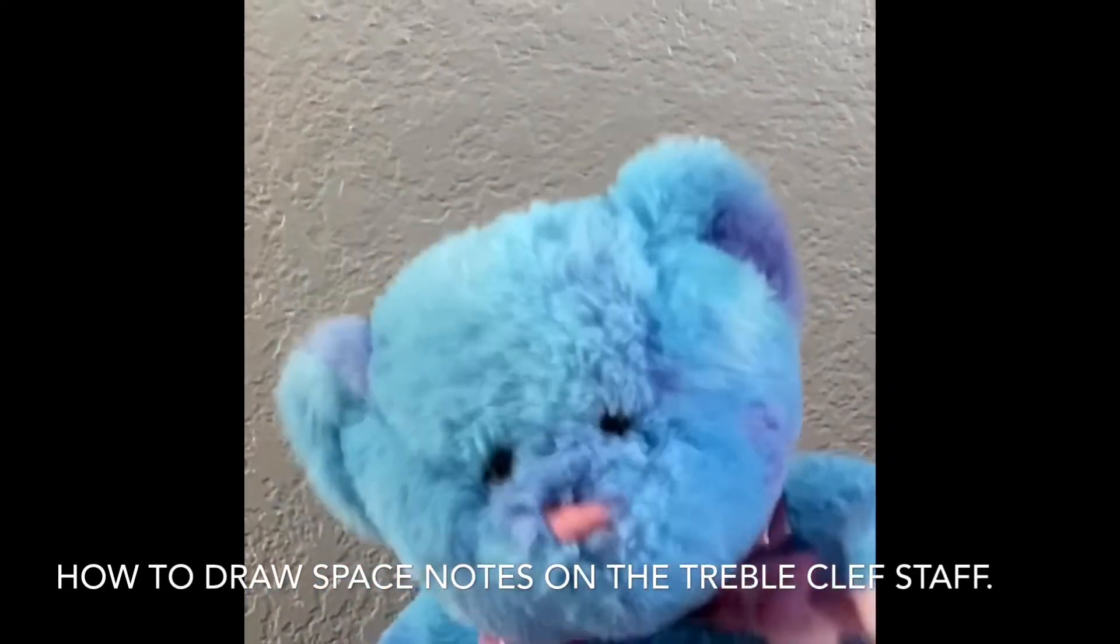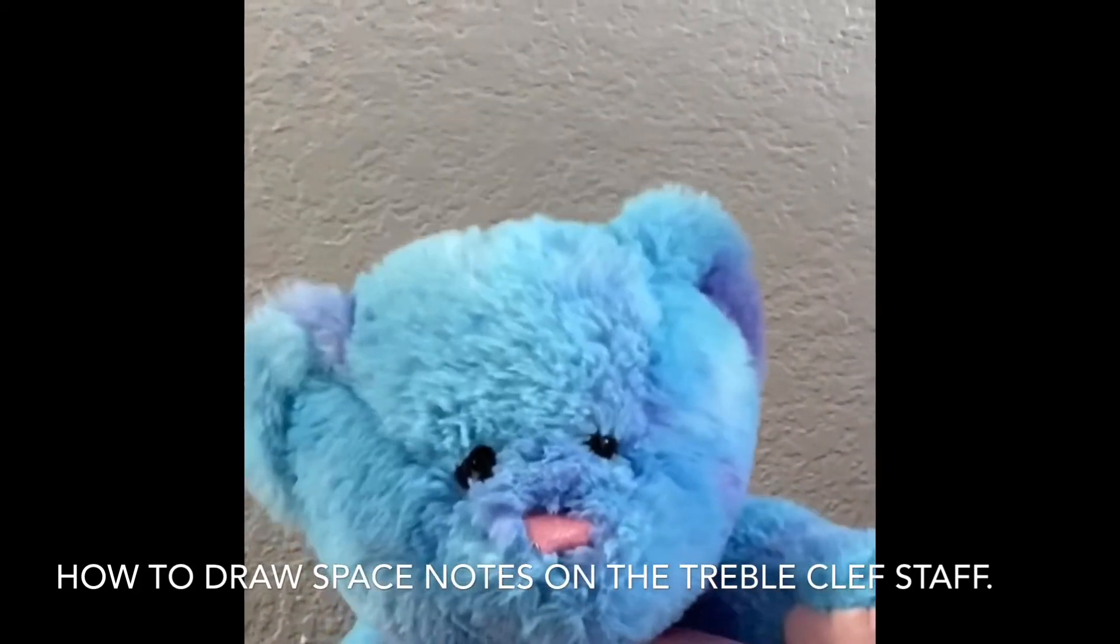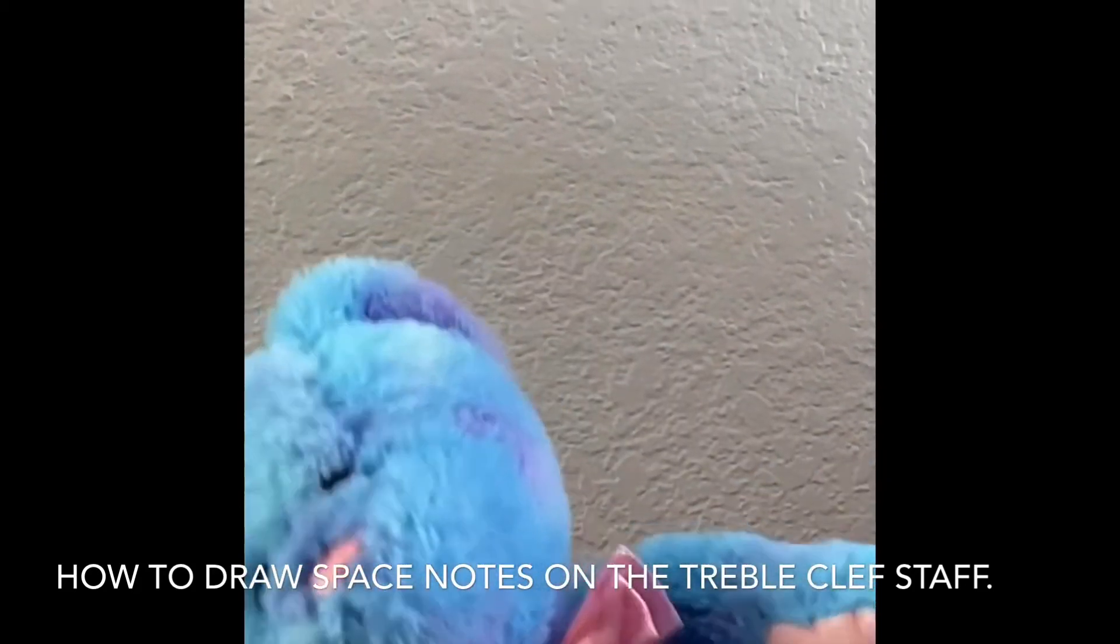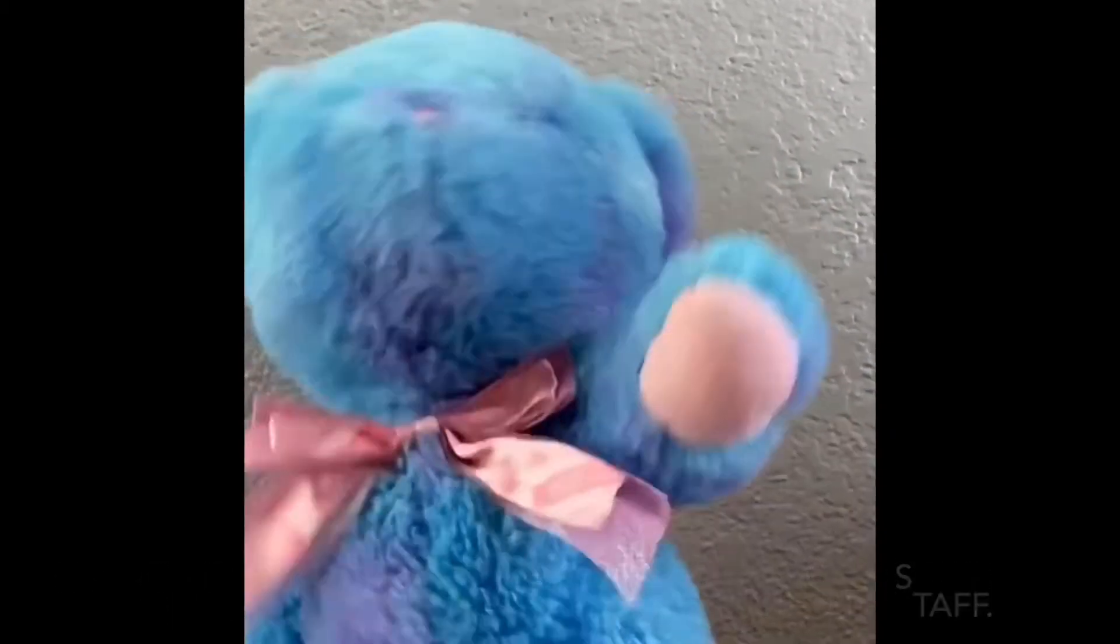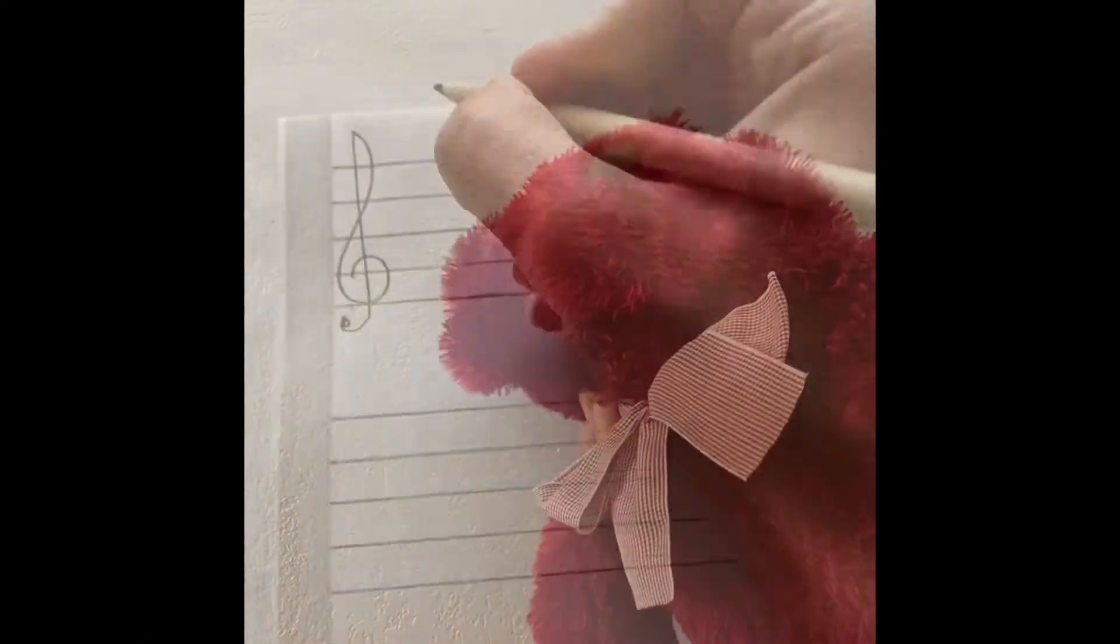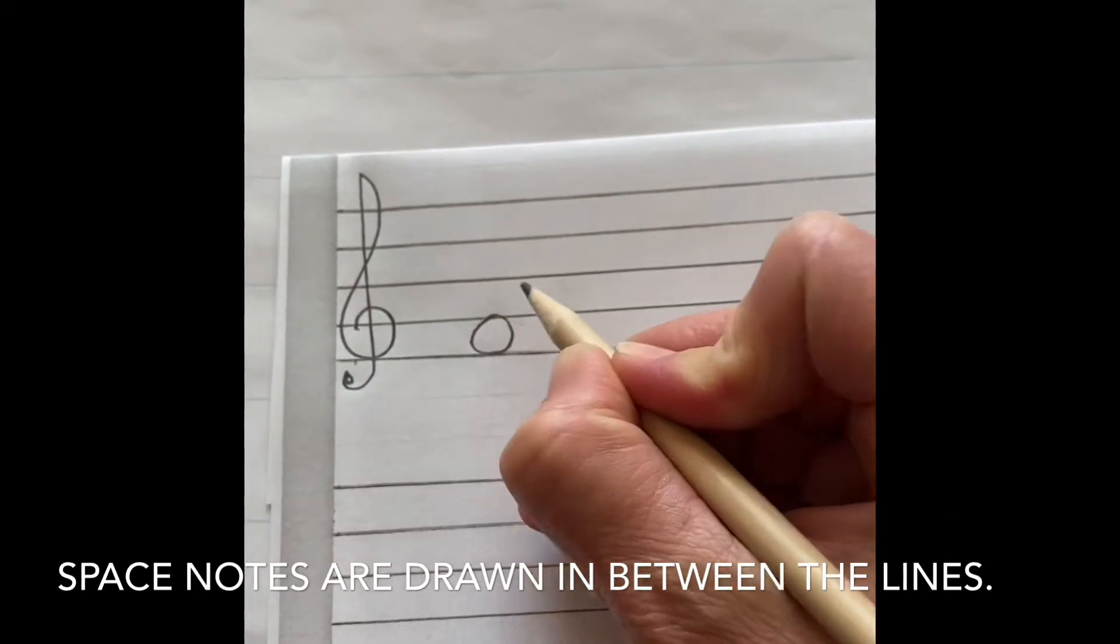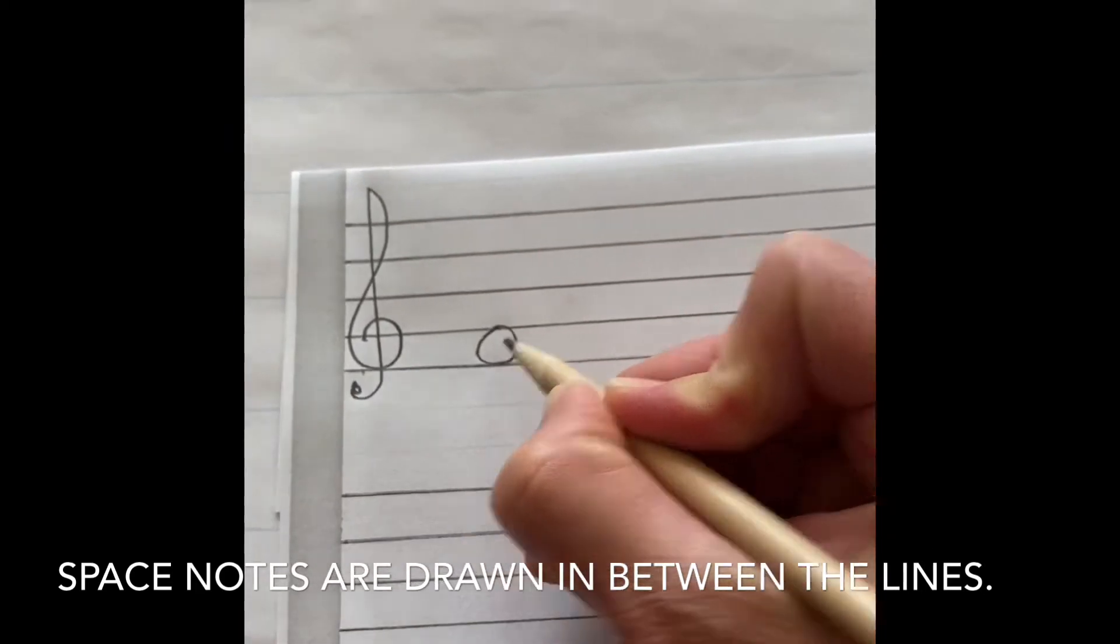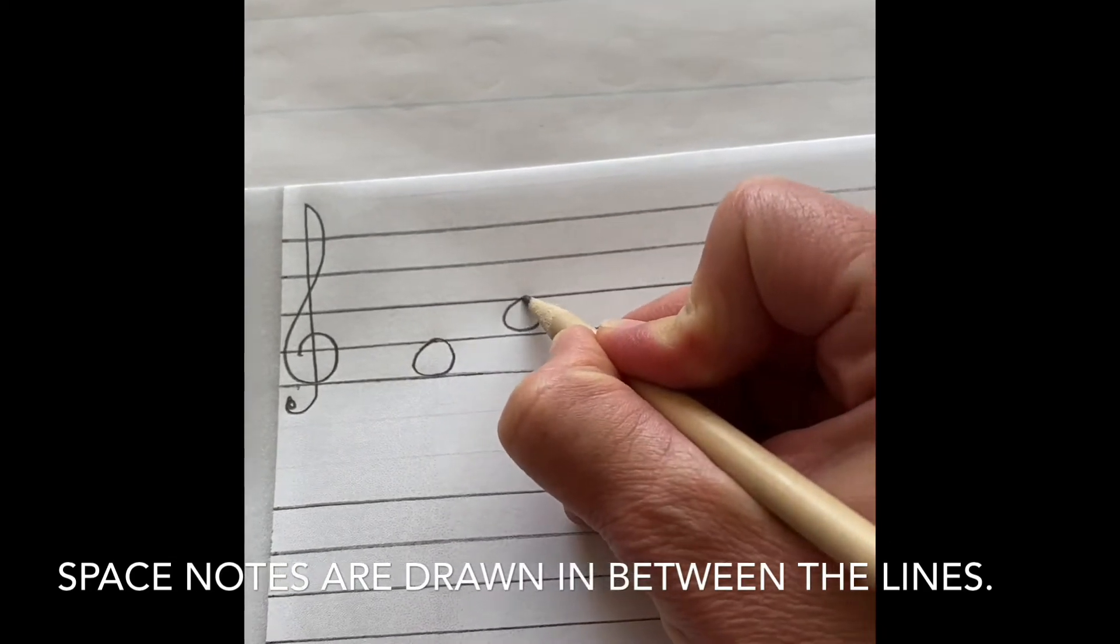How to draw space notes on the treble clef staff. Space—are we learning music in outer space? Okay, last time I taught you how to make staff paper out of lined paper. I copied it off here. Now we're learning about the space notes. They go in between the lines of the staff.